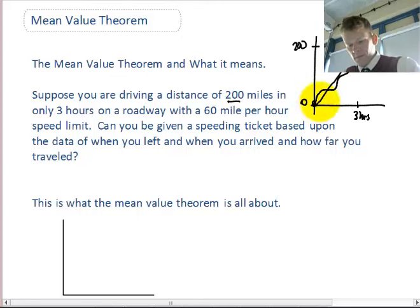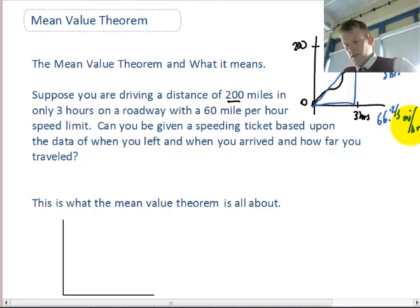On average, your slope between, your average speed was 200 miles per 3 hours, which puts you at about 66 and two-thirds miles per hour. So, the mathematics that guarantees that we can give you a ticket is based on the mean value theorem.